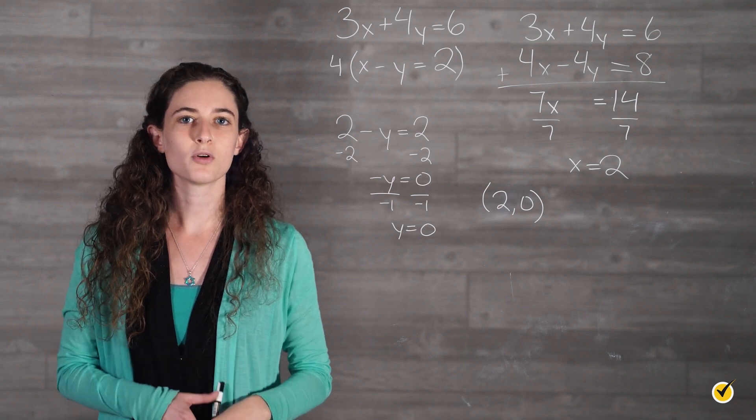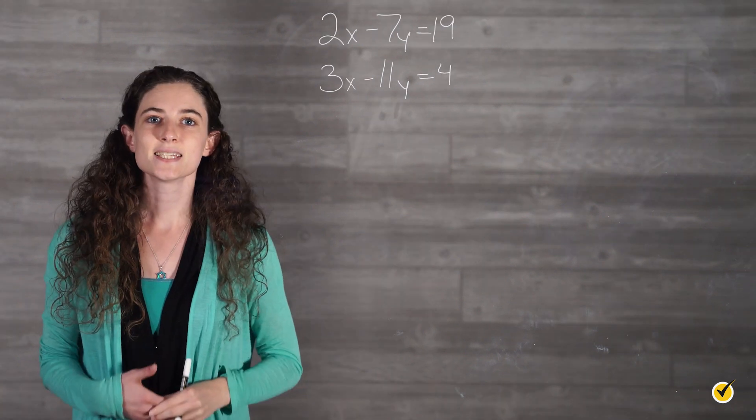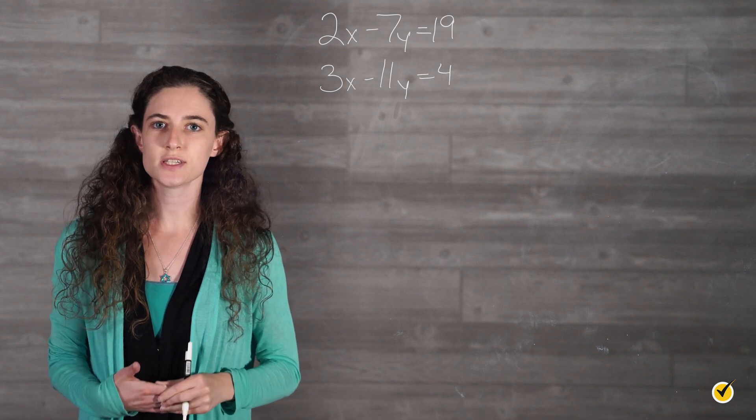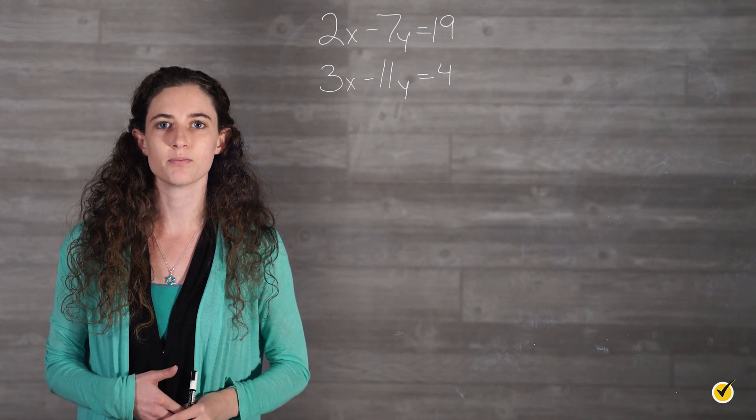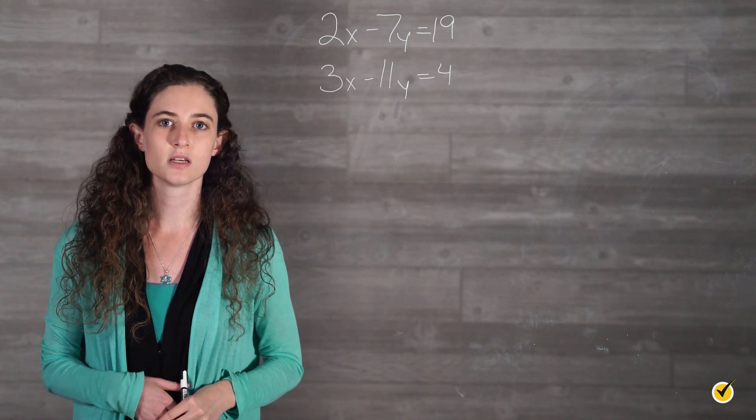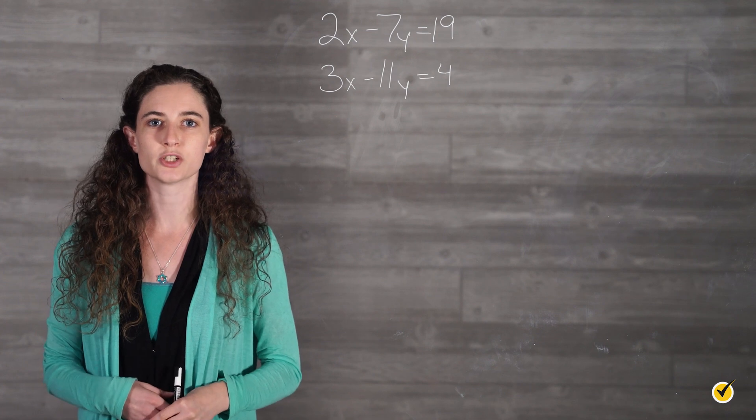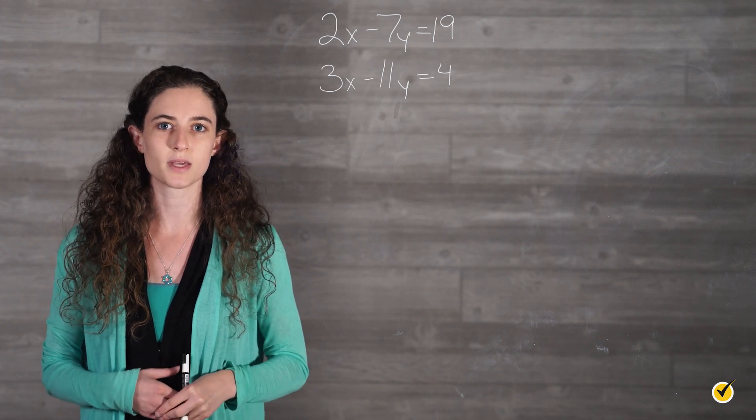I want to try one more example before we go. This example is a little bit different from our other ones because there isn't one number we can easily multiply an equation by to eliminate a term, not without using fractions. So for this example we are going to multiply both equations by a number in order to cancel something out.